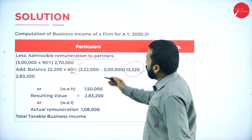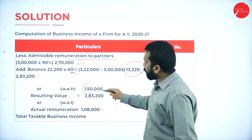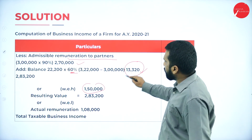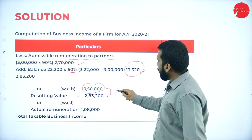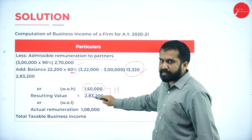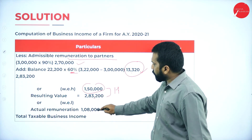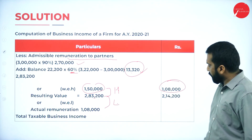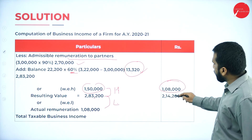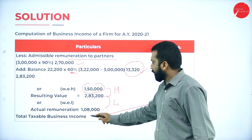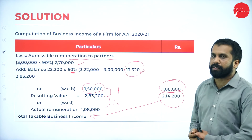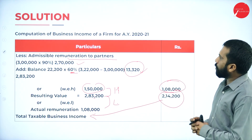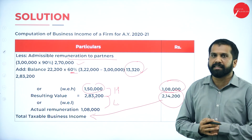Compare with 1,50,000 - whichever is higher. 2,70,000 plus 13,200 = 2,83,200, which is higher. Then compare actual remuneration 1,08,000 with 2,83,200 - whichever is less, so 1,08,000 is the admissible remuneration. Business income = 3,22,000 minus 1,08,000 = 2,14,200. This is all about computation of business income.